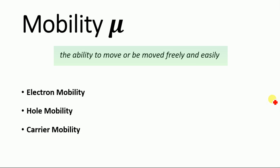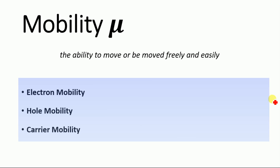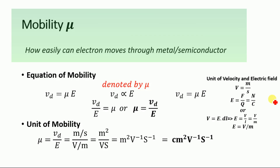In physics, mobility is the motion of electrons, or how easily electrons or holes can move inside a material. There are three different terms: electron mobility, hole mobility, and carrier mobility. Electron mobility relates to the mobility of electrons inside the material, hole mobility explains the motion of holes inside the material, and carrier mobility generally refers to both electron mobility and hole mobility. Mobility is an important term in transistors and semiconductors.